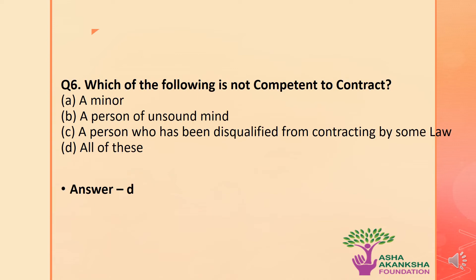The next question is: which of the following is not competent to contract? Options are: A) A minor, B) A person of unsound mind, C) A person who has been disqualified from contracting by some law, or D) All of these. The correct answer is option D — all of these. A minor, a person of unsound mind, and a person disqualified from contracting by some law are not competent to contract.